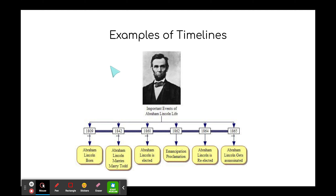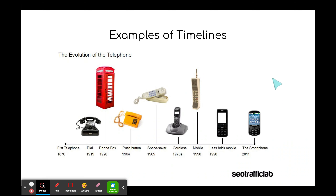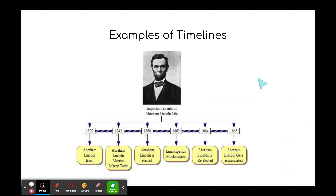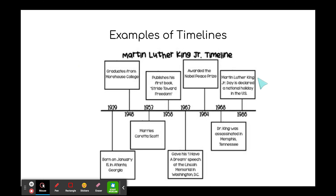Here's another example of a timeline. This timeline shows important events of Abraham Lincoln. If you notice, we have 1809 as the first year, and it goes all the way to 1865. So these are timelines of people's lives.